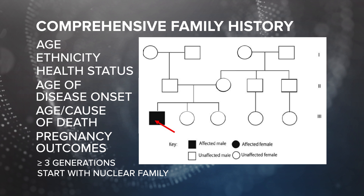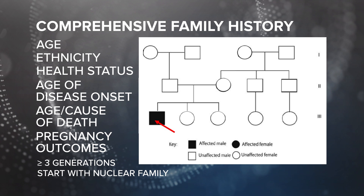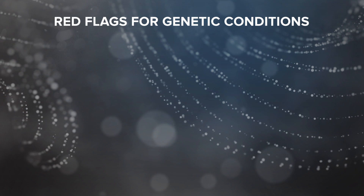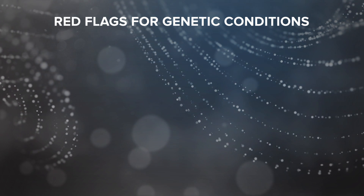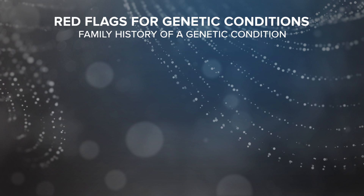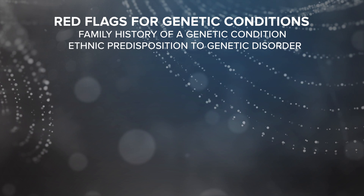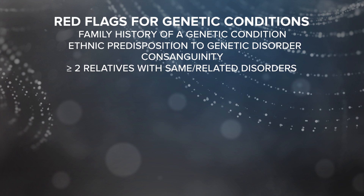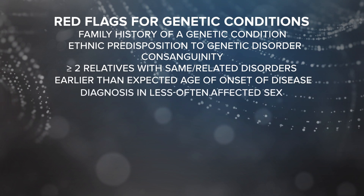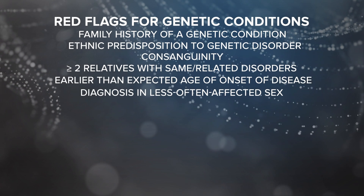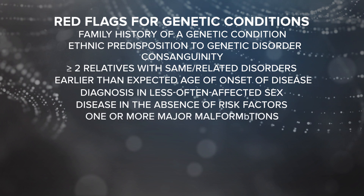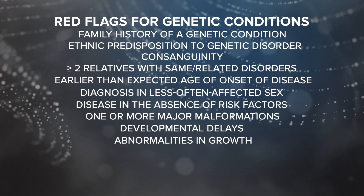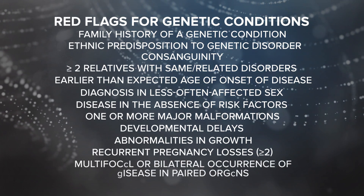Once you've recorded this information, you can begin to look for patterns that may be indicative of a genetic link. Here are a few red flags that could increase the likelihood of the presence of a genetic condition: family history, ethnic predisposition, consanguinity, other relatives with the same disorders, early age of onset, diagnosis in the less often affected sex, absence of risk factors, malformations, developmental delays, growth abnormalities, recurrent pregnancy losses, or bilateral occurrences.